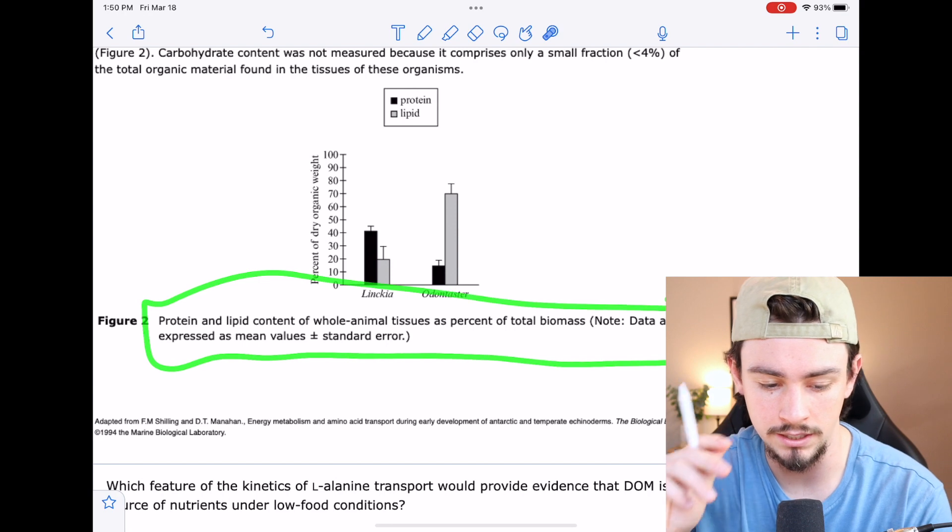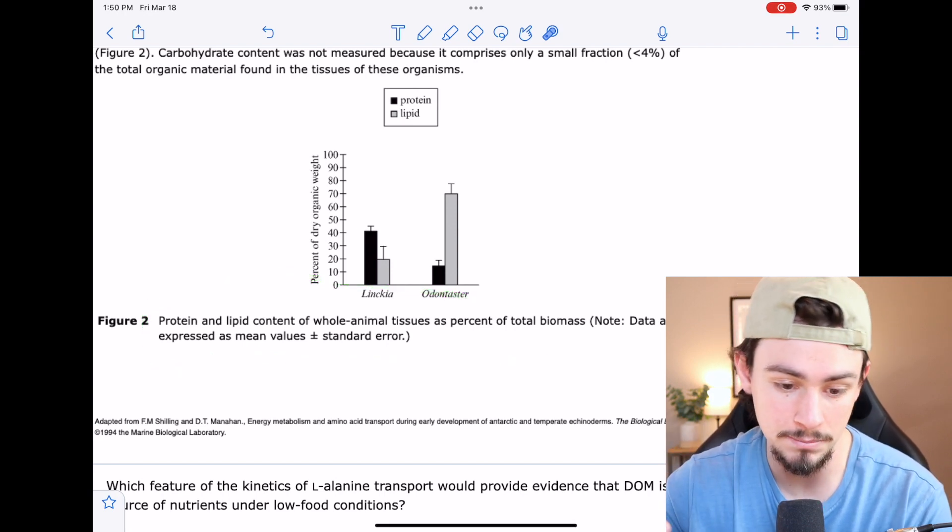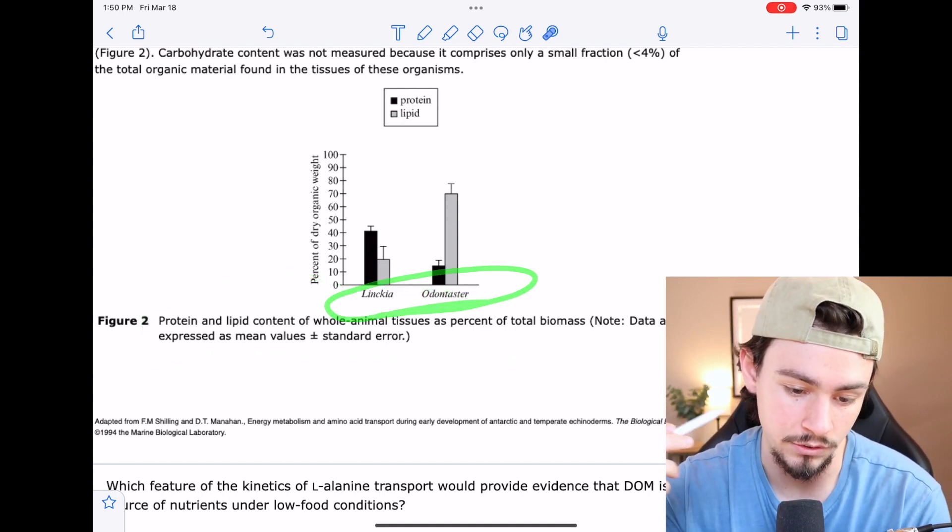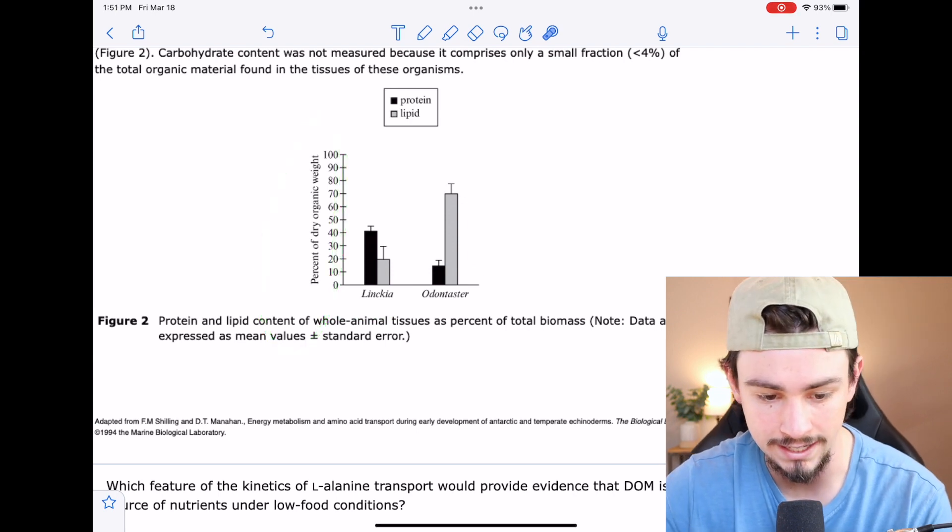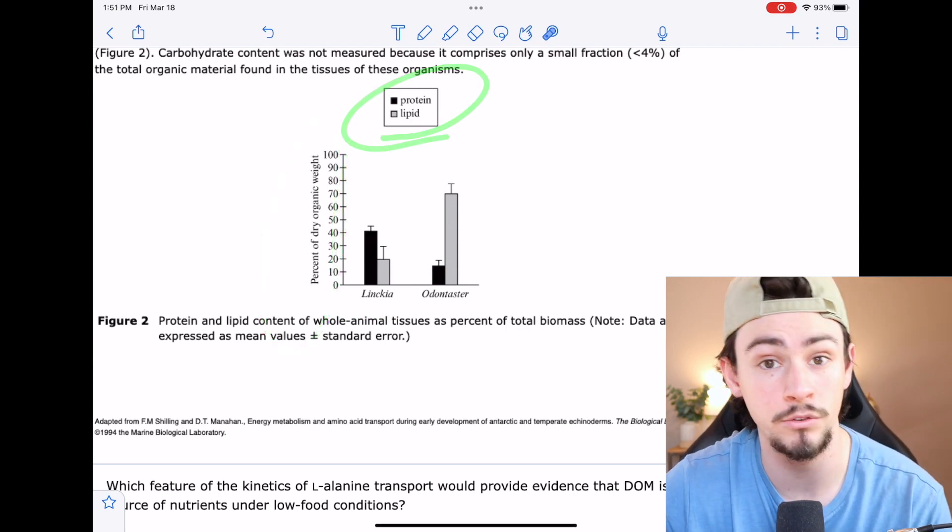Again, we'll look here. This is just telling us that we're looking at the available proteins and lipids. And they tell us that we're looking at these two separate larvae and the percentage of dry organic lipid or weight per protein or lipid.